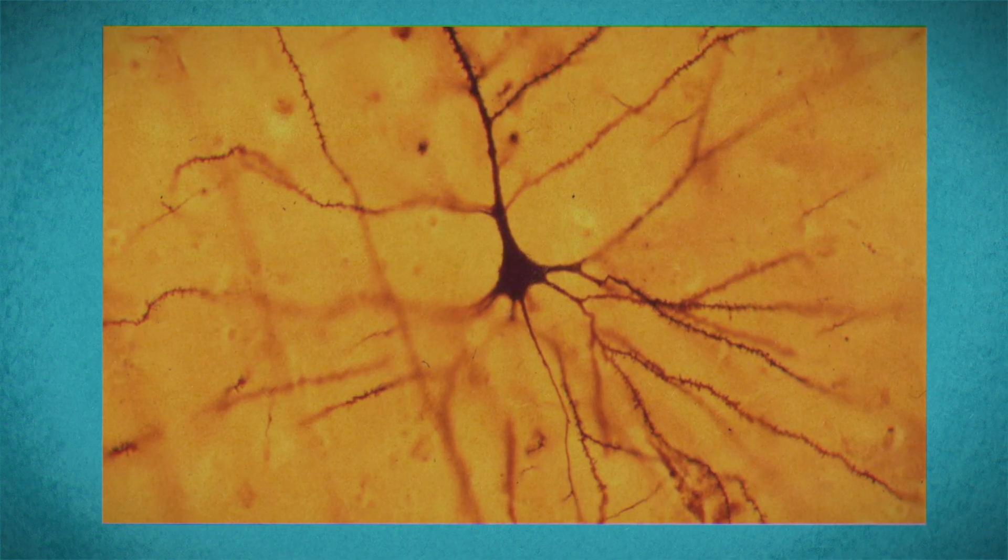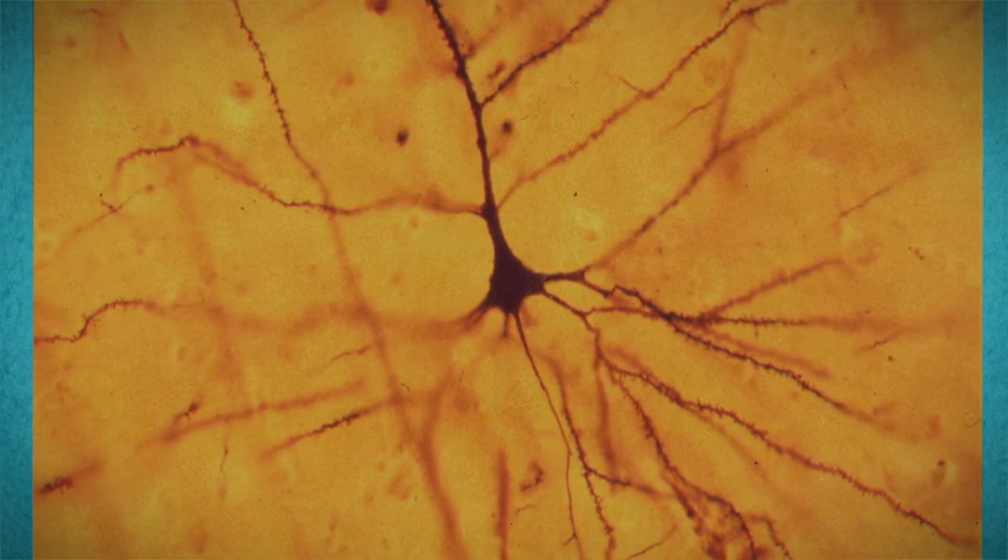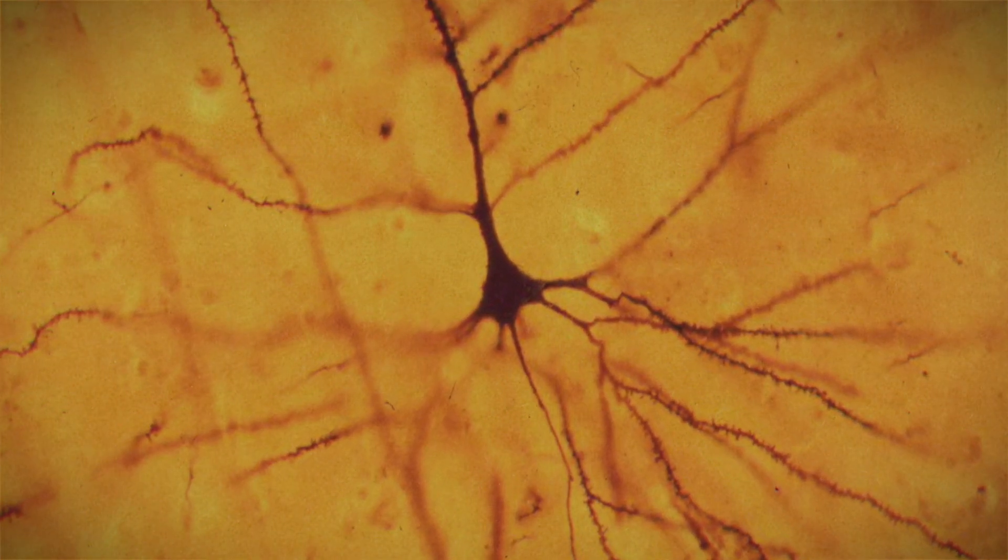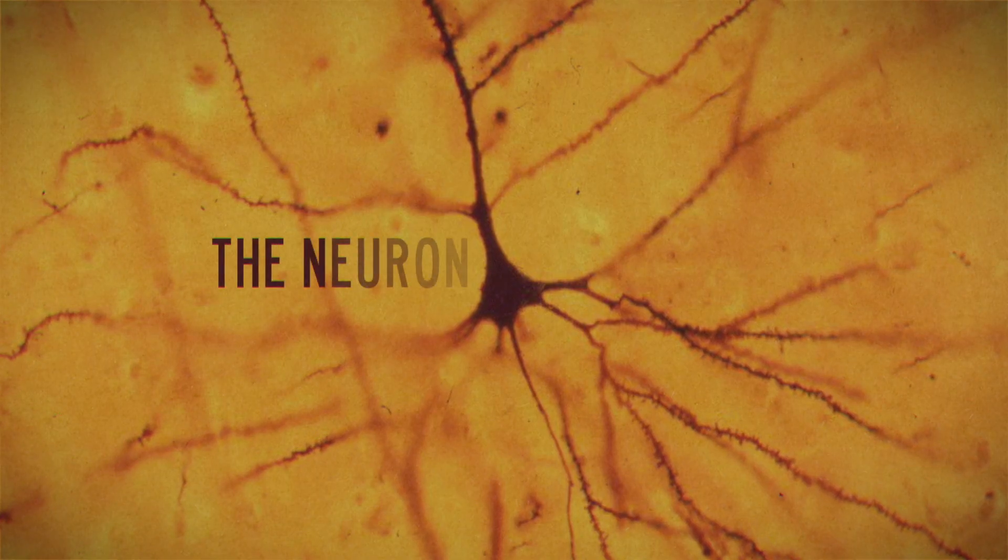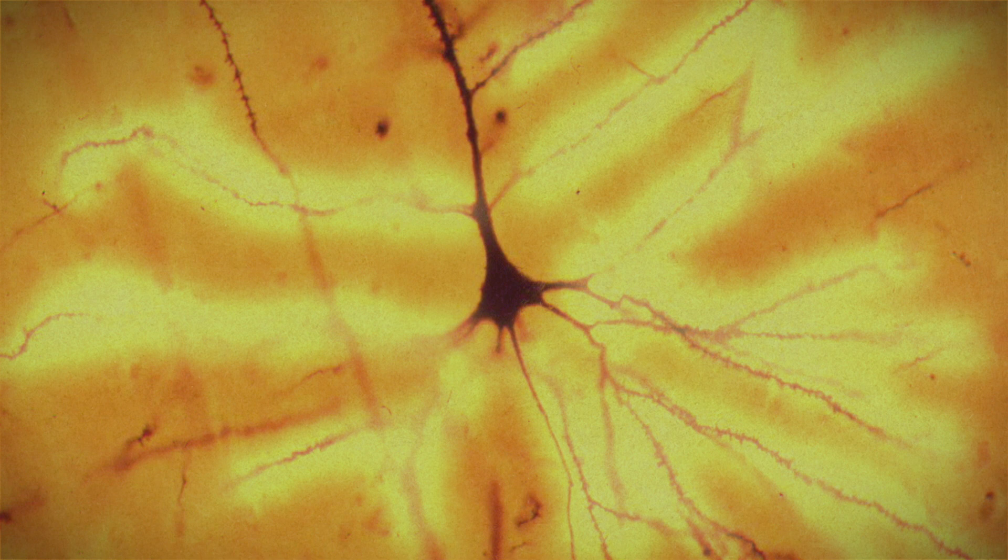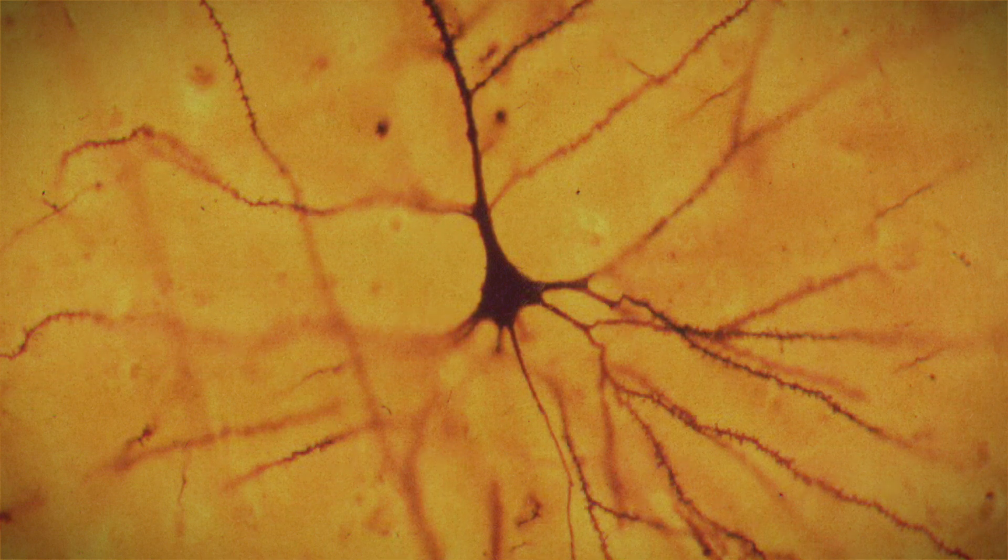Known as the black reaction, Golgi's method finally allowed researchers to see the entire cell body of what would later be named the neuron. The stain even highlighted the fibrous branches that shot off from the cell in different directions.